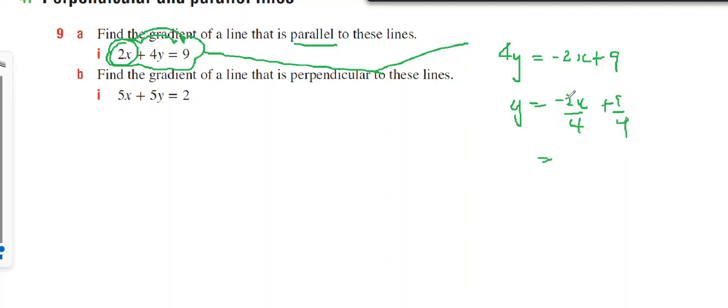Simplifying the fraction, 2 goes into that, so negative x/2. Therefore, the gradient is negative 1/2. For parallel lines, I want the same gradient, so the gradient is negative 1/2.